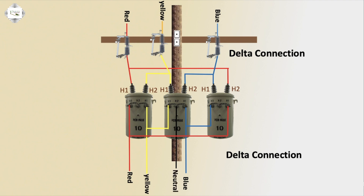That's the delta connection — low voltage side to delta connection, delta-to-delta connection transformer, high voltage to low voltage convert. Very simple circuit diagram, high voltage to low voltage connection.